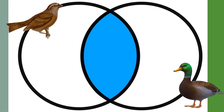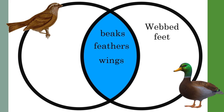We can use this Venn diagram to compare animals like the sparrow and the mallard. These animals are both birds and share characteristics — they both have beaks, they both have feathers and they both have wings. However, the mallard has webbed feet whilst the sparrow has three toes. The mallard lives in water and its webbed feet help it to swim, whereas the sparrow lives in gardens and woodlands and its three toes are useful for digging up worms.